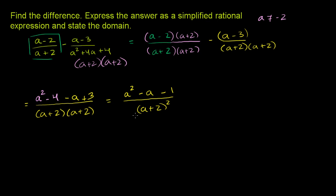We have simplified the rational expression. And the domain is for all a's, except for a cannot, or all a's, given that a does not equal negative 2. All a's except for negative 2. And we are done.